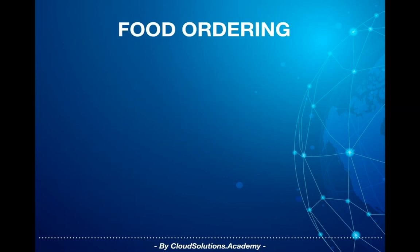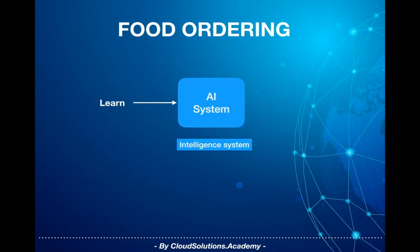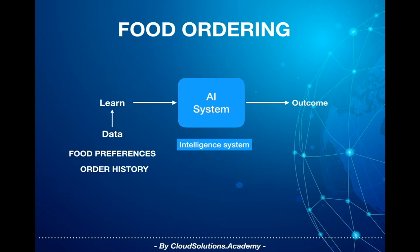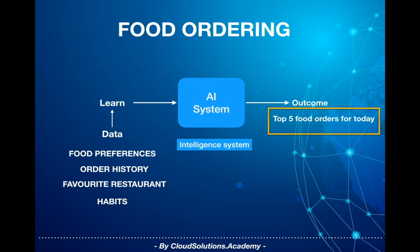For instance, if an AI is recommending what food to order, it must know your food preferences, what you had ordered before, where you usually order from, what days you usually order specific cuisine, and a lot of other details to recommend the right cuisine for you. The output can be a list of top five food orders for today.